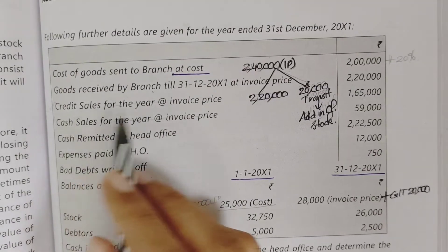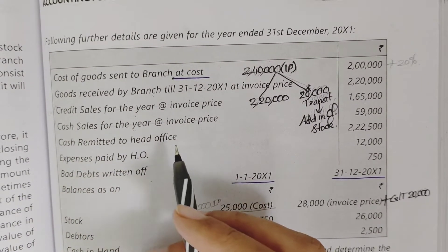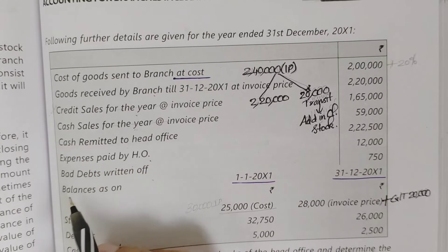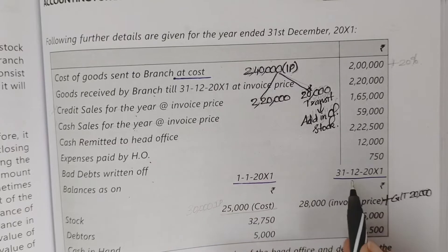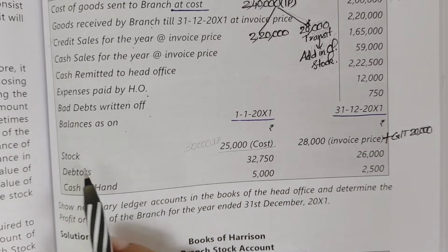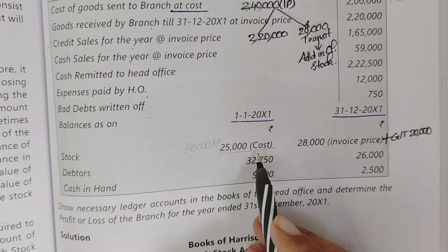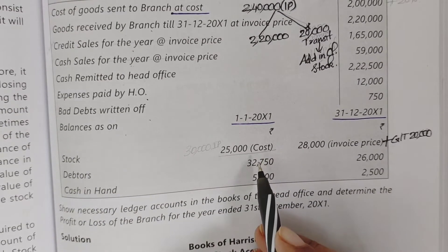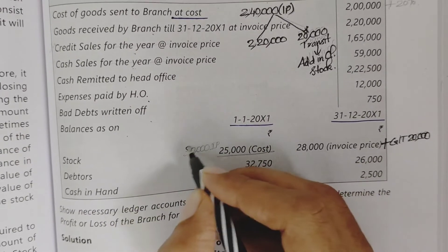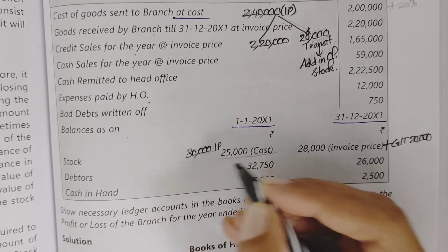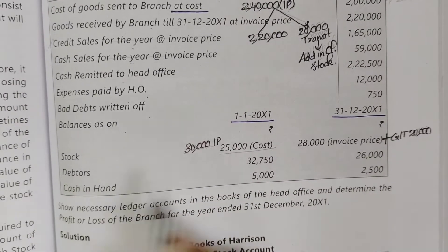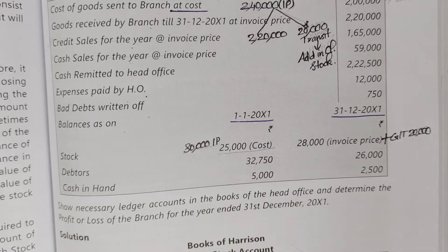The next items: credit sales, cash sales — invoice price is considered. Then cash remitted to head office, expenses paid by HO, bad debts, return of balance as on 1st January and 31st December — opening balance and closing balance. Opening stock at cost is $25,000. Invoice price is $25,000 plus 20% = $30,000 opening stock at invoice price. Closing stock invoice price, debtors, and cash in hand are also given.